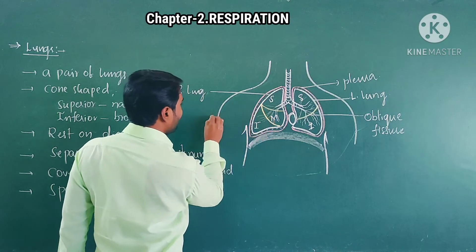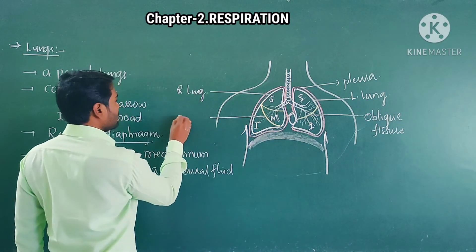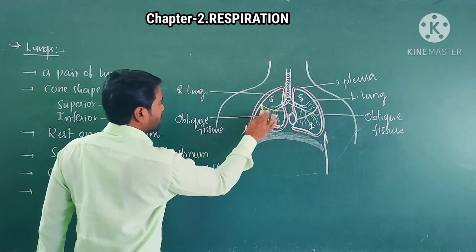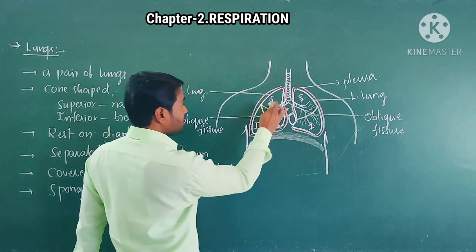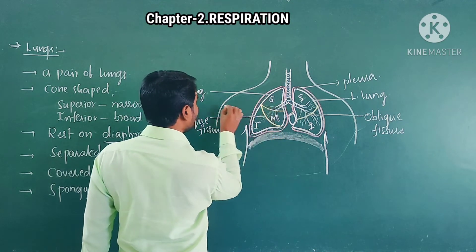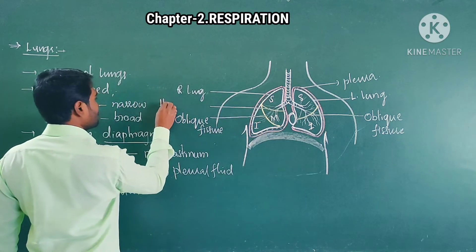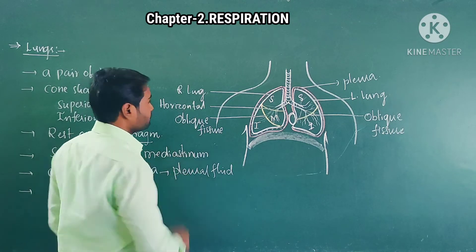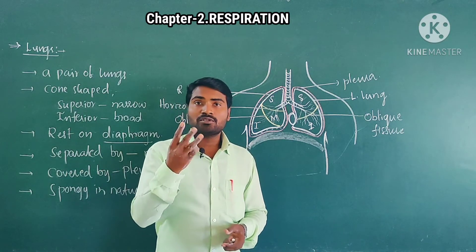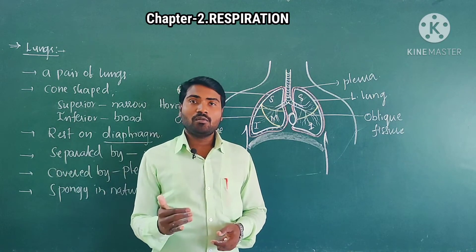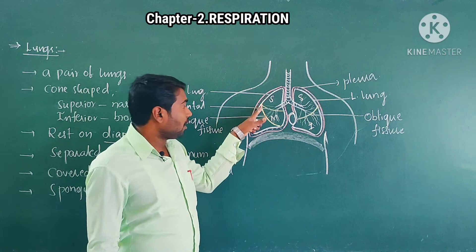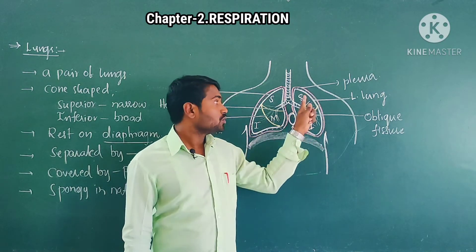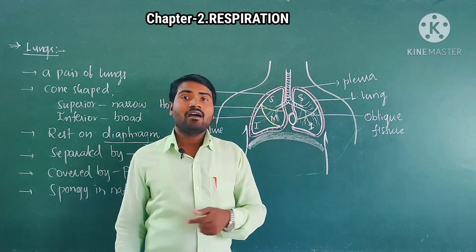The right lung also has an oblique fissure, plus a horizontal fissure. So the right lung is divided into three lobes — superior lobe, middle lobe, and inferior lobe — divided by oblique fissure and horizontal fissure. Whereas the left lung has only two lobes — superior lobe and inferior lobe — divided by oblique fissure.